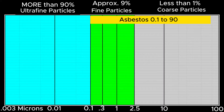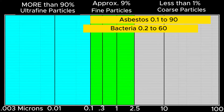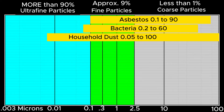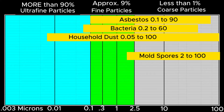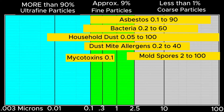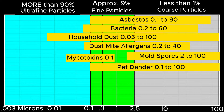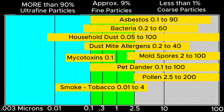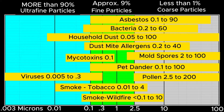Here are some common particles and their size ranges. Asbestos is 0.1 to 90 microns — we can see particles over 40 microns but not the smaller ones. Bacteria is 0.2 to 60 microns. Household dust is 0.05 to about 100 microns — for every dust particle you can see, there are about nine others you cannot. Mold spores are 2 to 100 microns. Mycotoxins are 0.1 microns and can attach to dust you breathe, causing health problems. Pet dander is 0.1 to 100 microns. Pollen is 2.5 to 200 microns. Tobacco smoke is 0.01 to 4 microns. Wildfire smoke is less than 0.1 to 100 microns. And viruses are 0.005 to 0.3 microns in size.